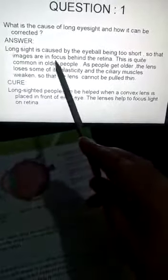So first, what are the causes? Long sight is caused by the eyeball being too short so that images are in focus behind the retina. This is quite common in older people. As people get older, the lens loses some of its elasticity and the ciliary muscles weaken so that the lens cannot be pulled thin. Here you can see.